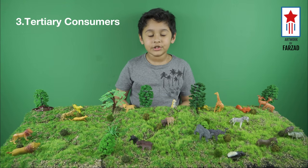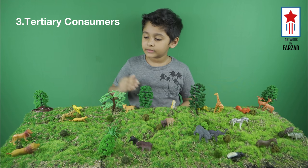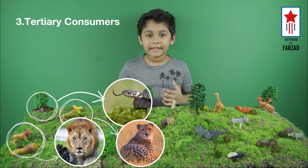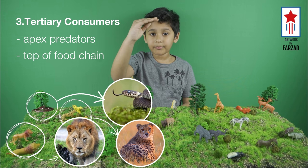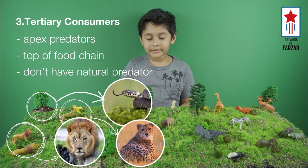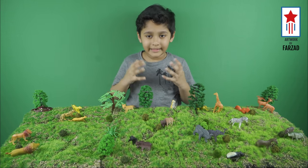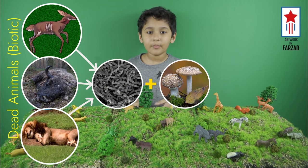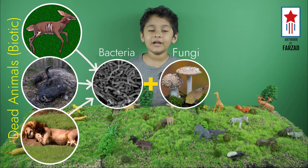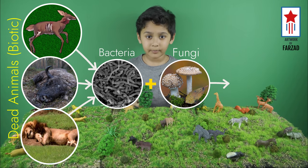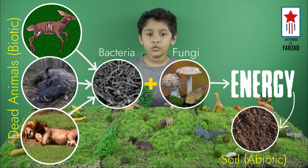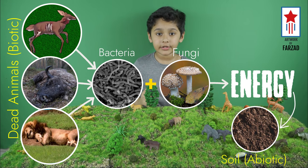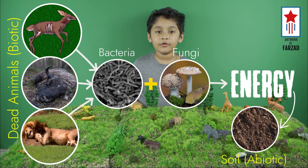Finally, the tertiary consumers. Tertiary consumers are lions, cheetahs, snakes, etc. They are called apex predators. They stay at the top of the food chain and do not have any natural predator. When any organism dies, it is eventually eaten and broken down by decomposers, mostly bacteria and fungi. Lastly, the decomposers give the energy back to the soil, which is an abiotic component, and thus the exchange of energy continues to living and non-living organisms.